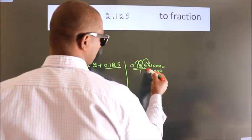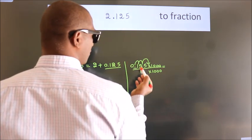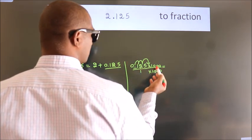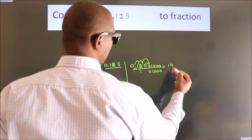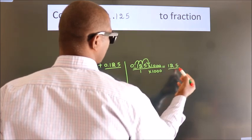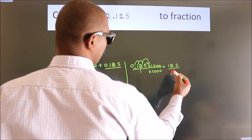Next, 0.125 times 1000 equals 125. 1 times 1000 equals 1000.